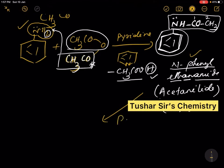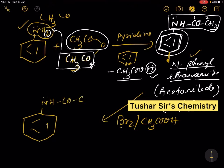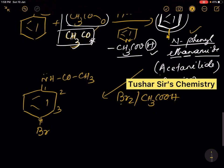On treatment with bromine in acetic acid, acetanilide gives 4-bromoacetanilide. This is the fourth (para) position, and bromine is bonded to the para position while the H atom present there is substituted. This para-substituted product is the major product.